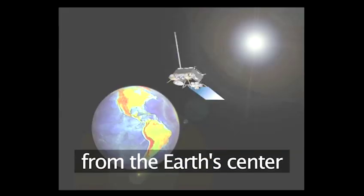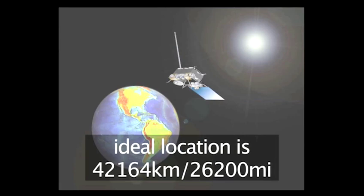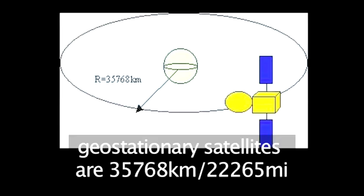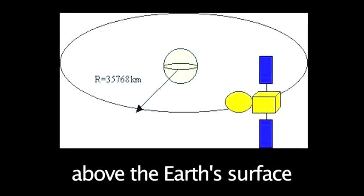The radius of the satellite's orbit must be 42,164 kilometers, and the Earth's radius is 6,378 kilometers. That means geostationary satellites are placed at 35,768 kilometers from the Earth's surface.